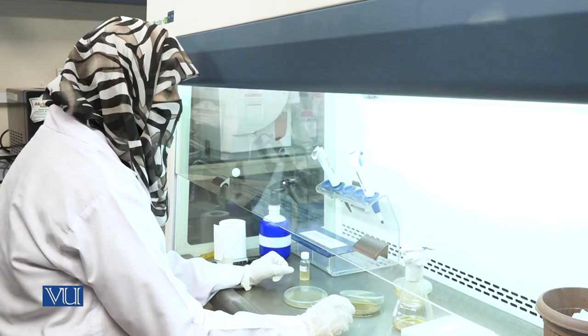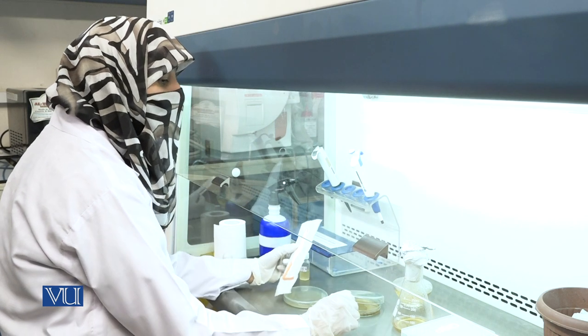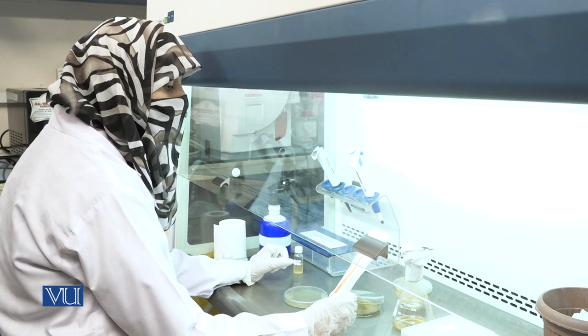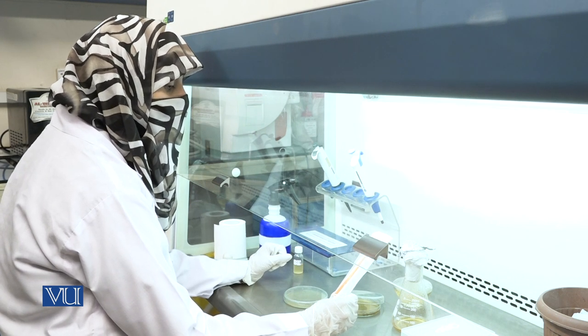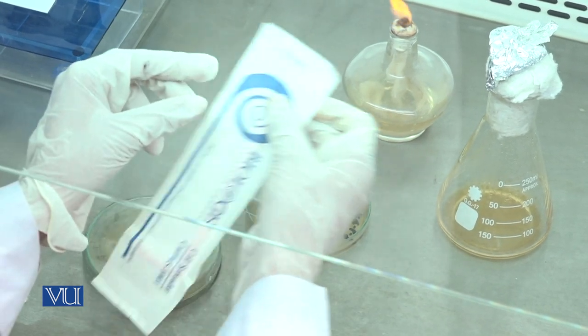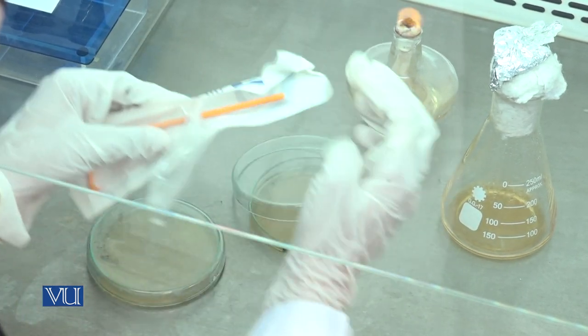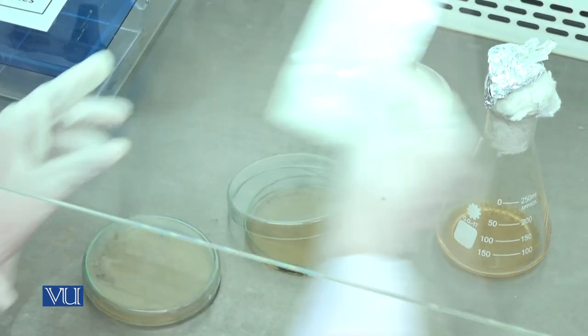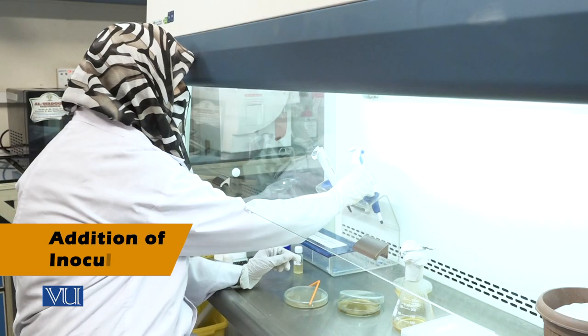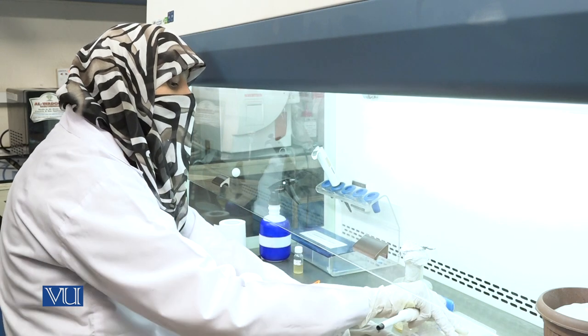Now, take already poured plate and use spreader for spreading the inoculum. If you use glass spreader, then it is preferable to dip the spreader in alcohol and then flame it on burner. This is disposable spreader.